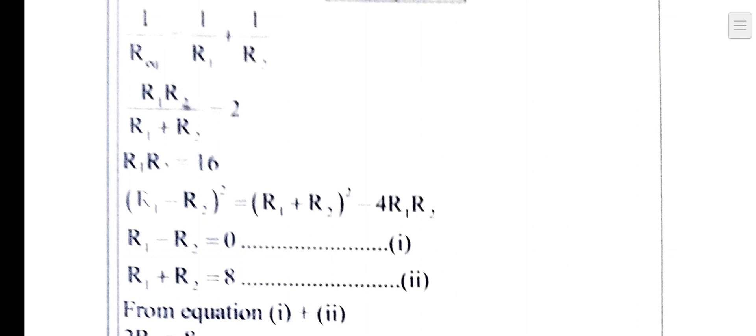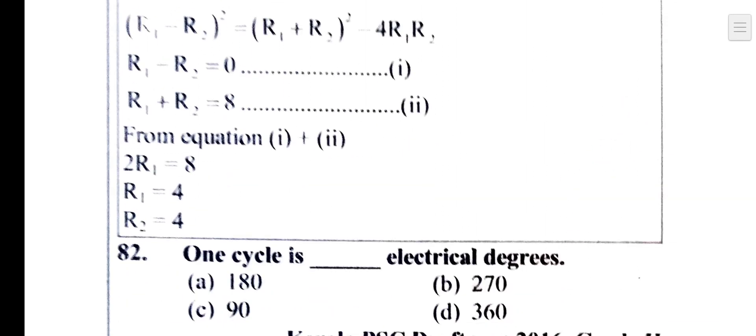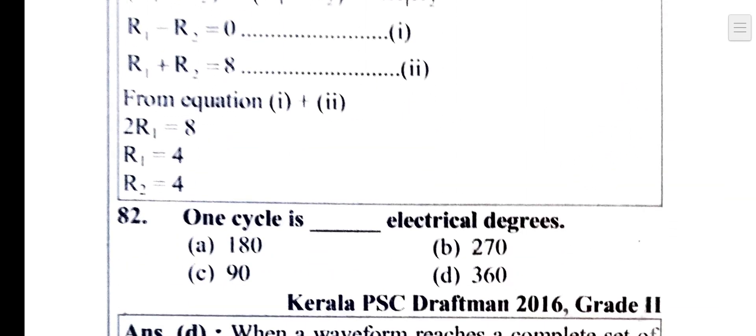Solving for the values of R1 and R2, the answer is option C: each resistance is 4 ohm.